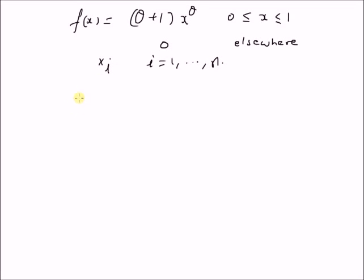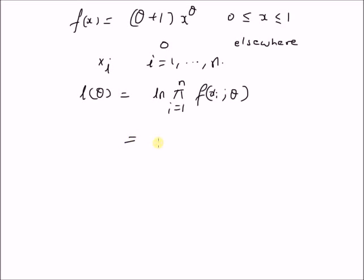The log likelihood function L of theta is defined as the logarithm of the product from i equal to 1 to n of f of x_i given the parameter theta. This equals the summation from i equal to 1 to n of the logarithm of the probability density function, which is theta plus 1 multiplied by x_i power theta.